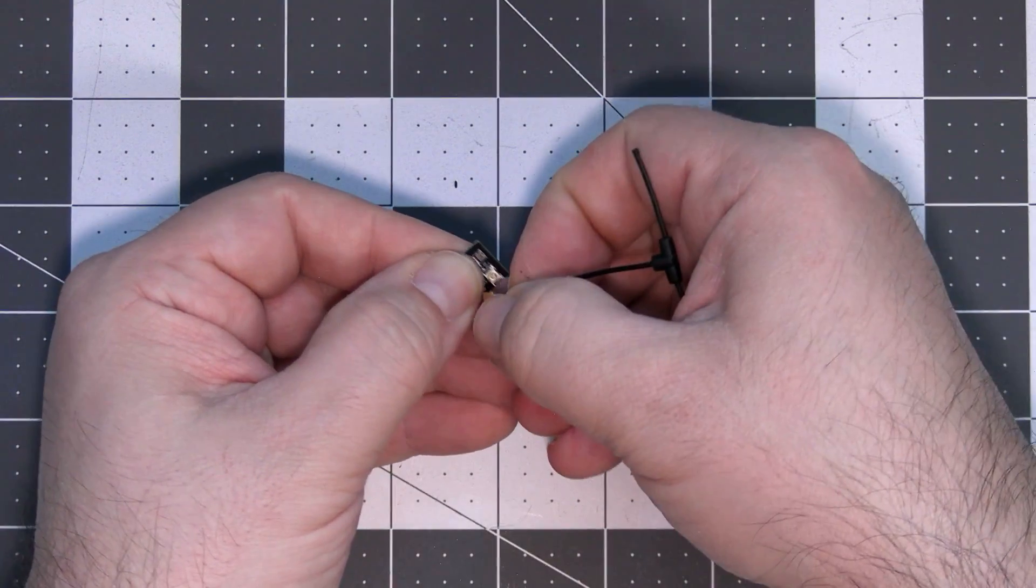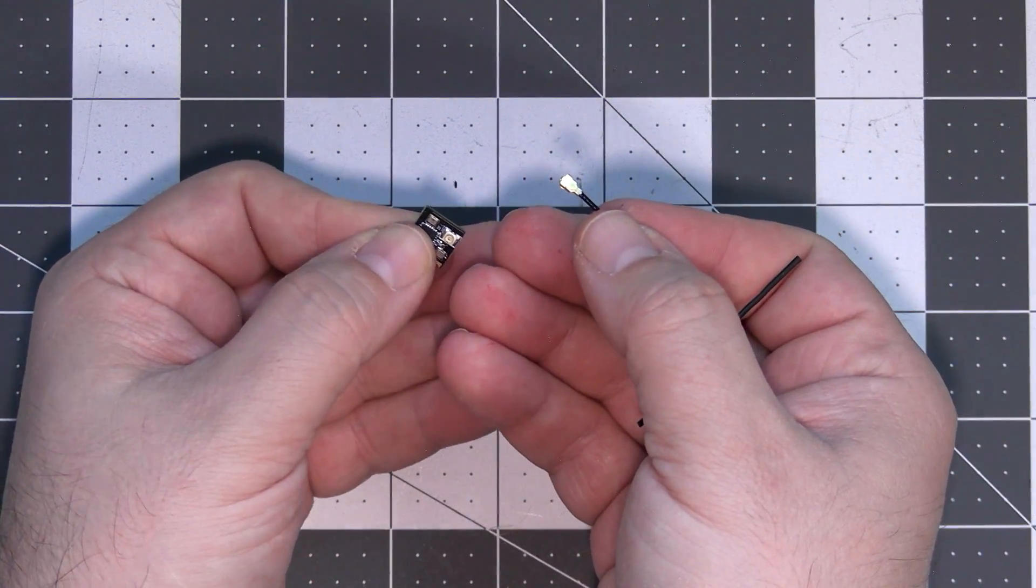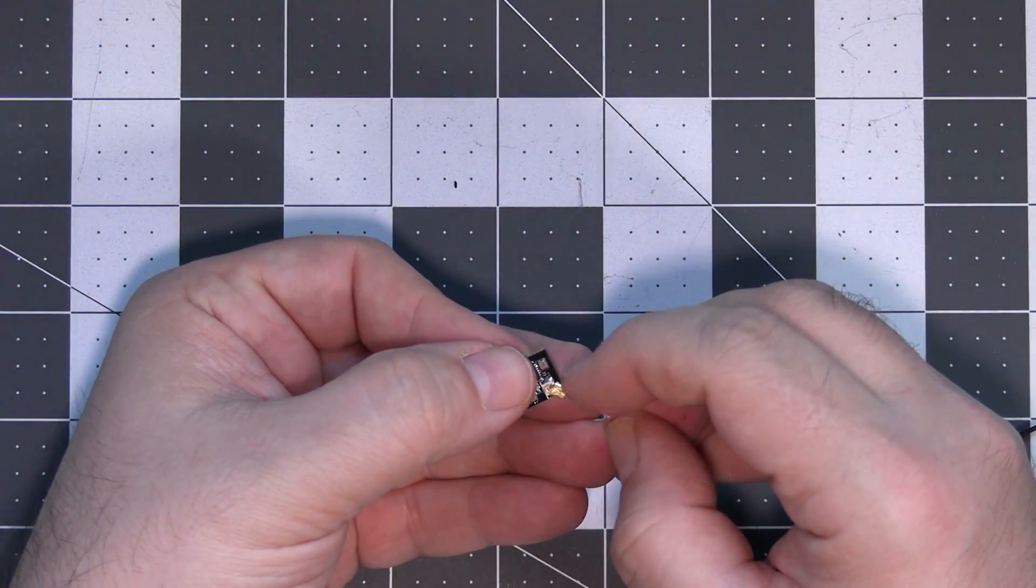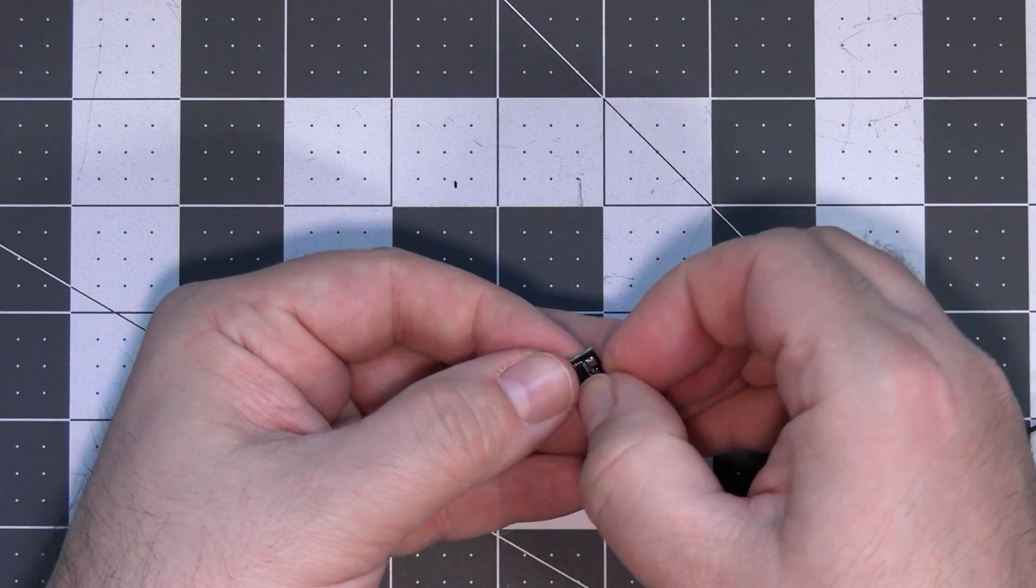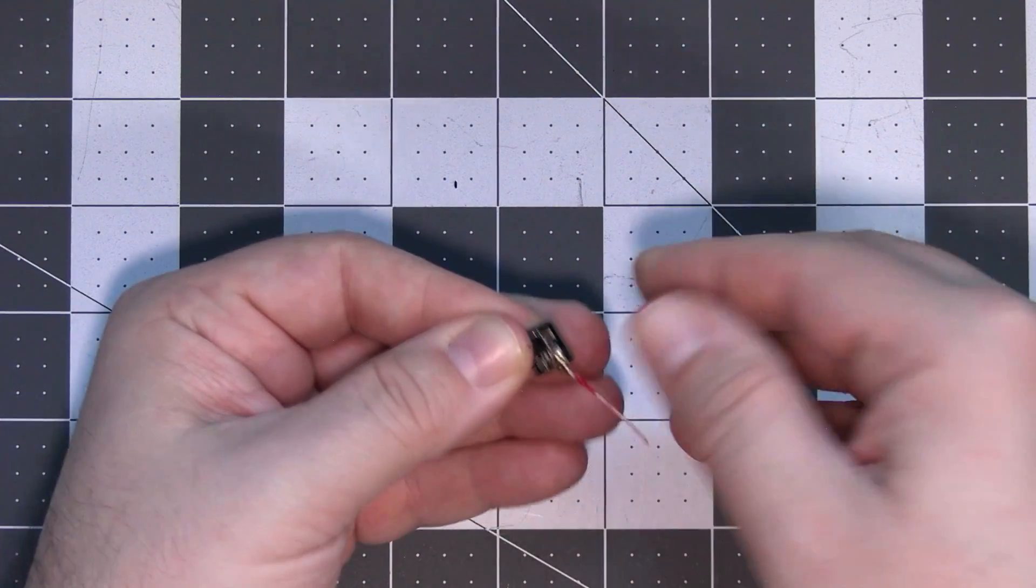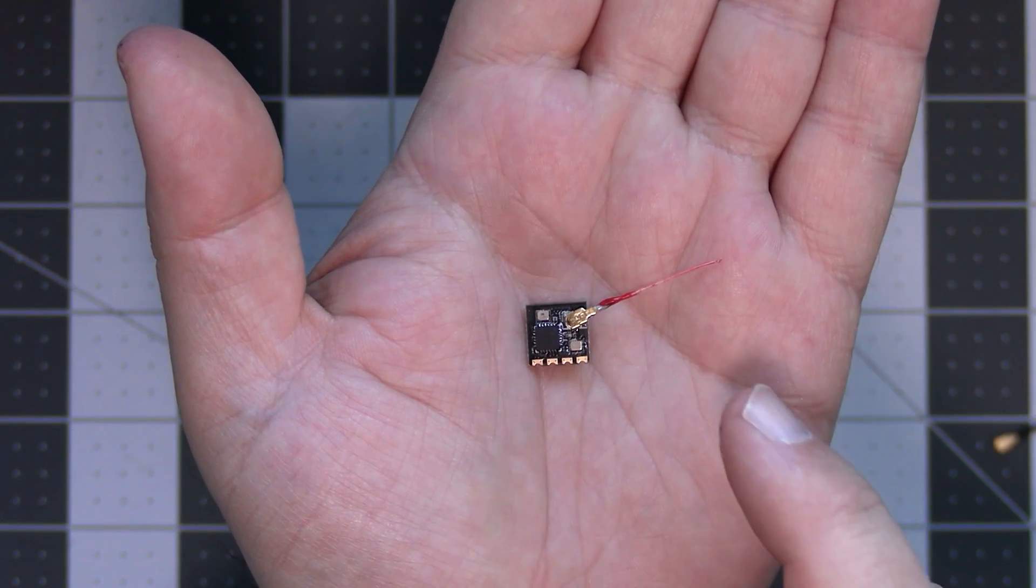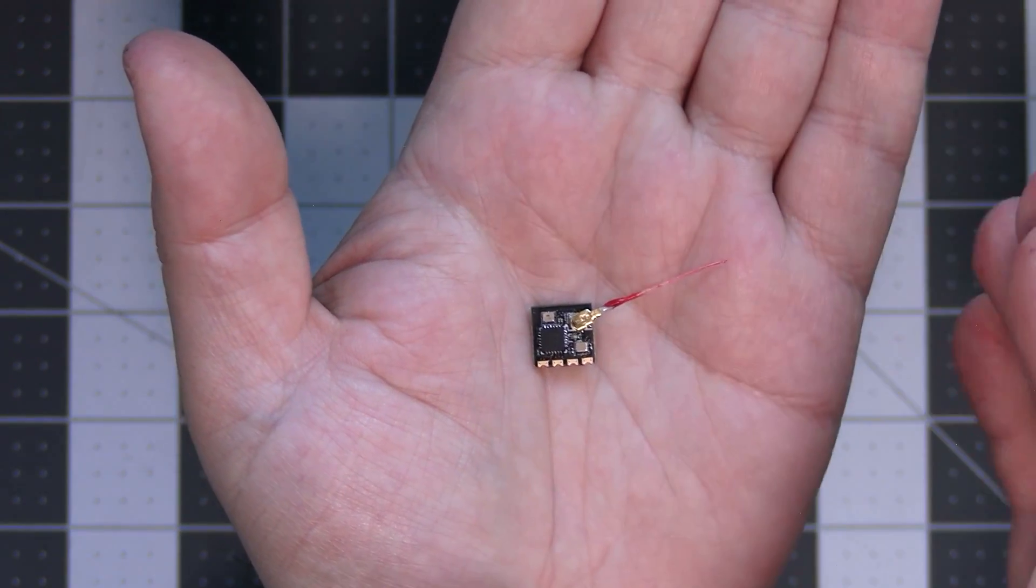And the final step is to remove the existing antenna just by pulling the plug off the receiver and attach the antenna we just procured by attaching the connector to the correct socket. And that's all. Our nano antenna for the ExpressLRS 2.4 GHz receivers is ready.